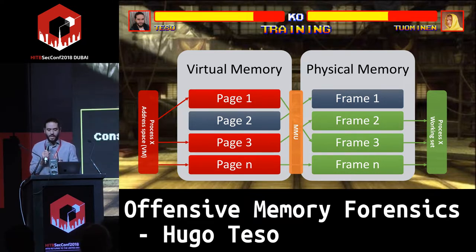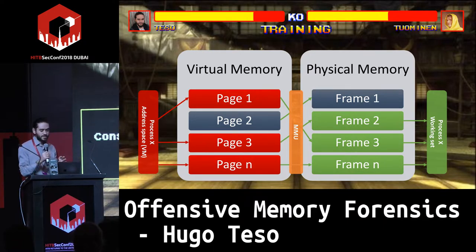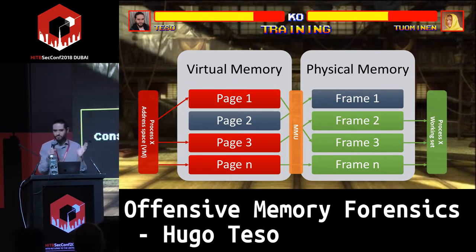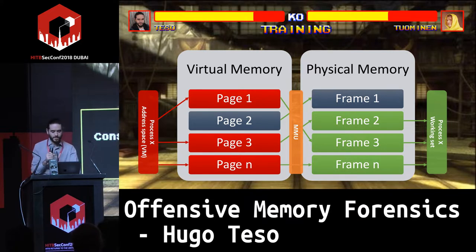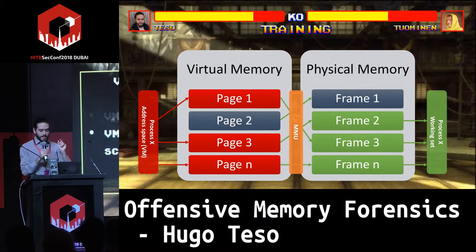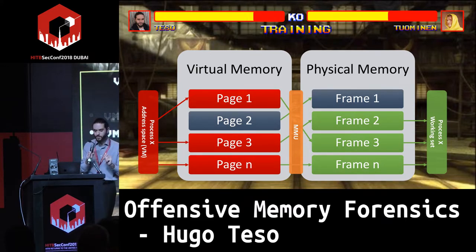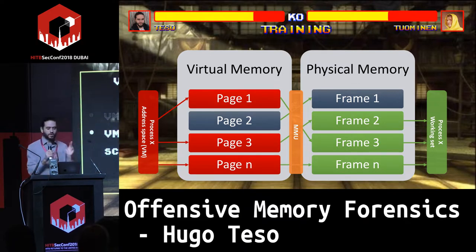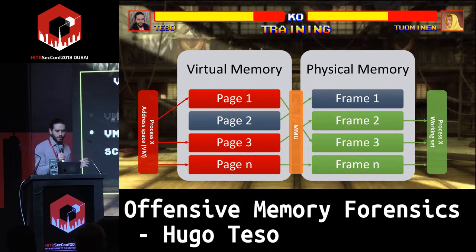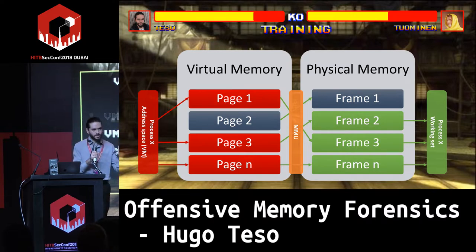If the operating system needs to find where page three is located, it asks the MMU, which says it's stored on frame two — which could be on the hard drive or RAM — and it's constantly changing. You can consider pages and frames just like any other unit of memory, like bytes or megabytes. Virtual memory is also understood as the collection of pages scattering the memory of a process's working set.